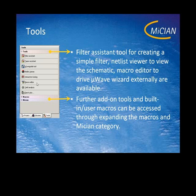With this macro editor you can create the second kind of tools, which are the macros. You write a kind of Visual Basic code, save them, and you can use them in the Microwave Wizard. The third kind of tools are programmed in a different language and you connect them via COM to the Microwave Wizard — those are the plug-in tools.